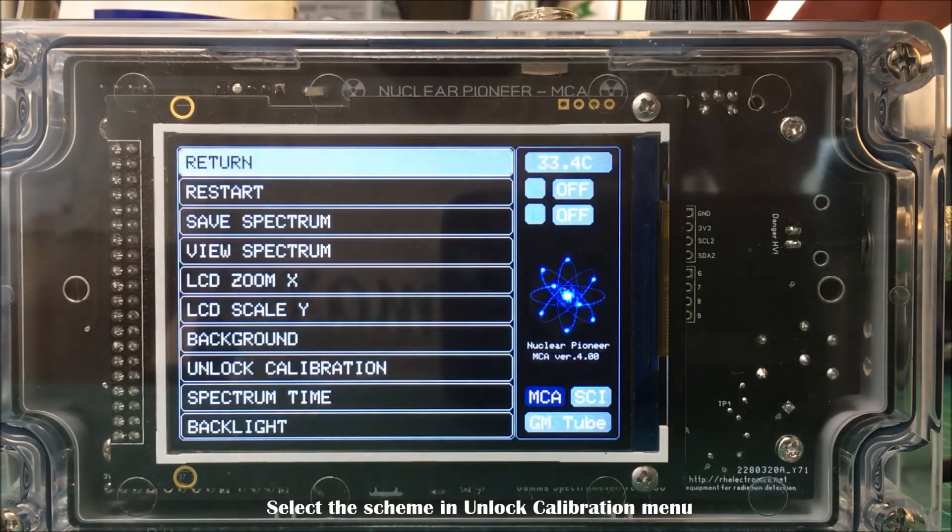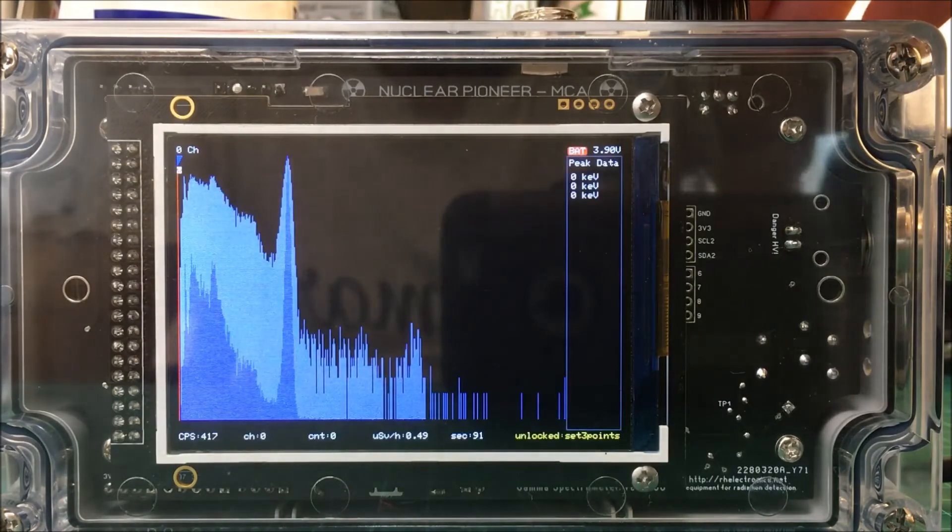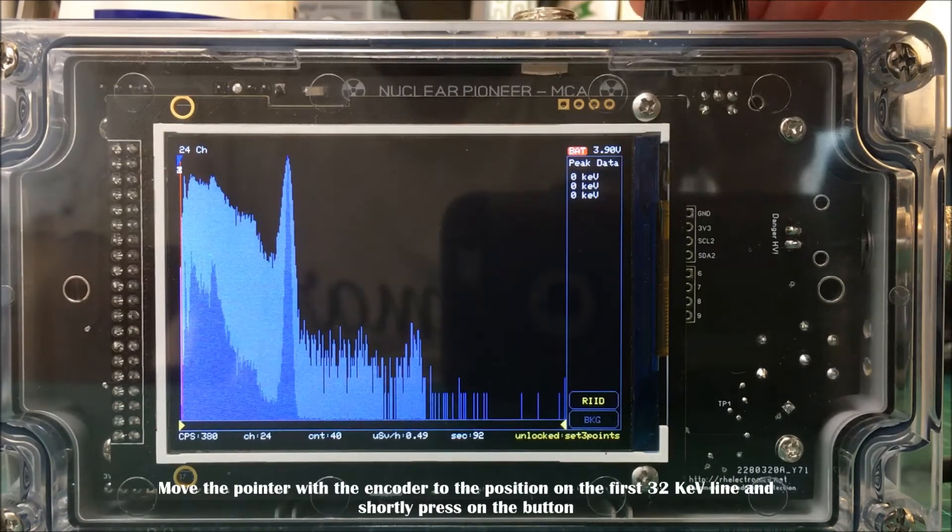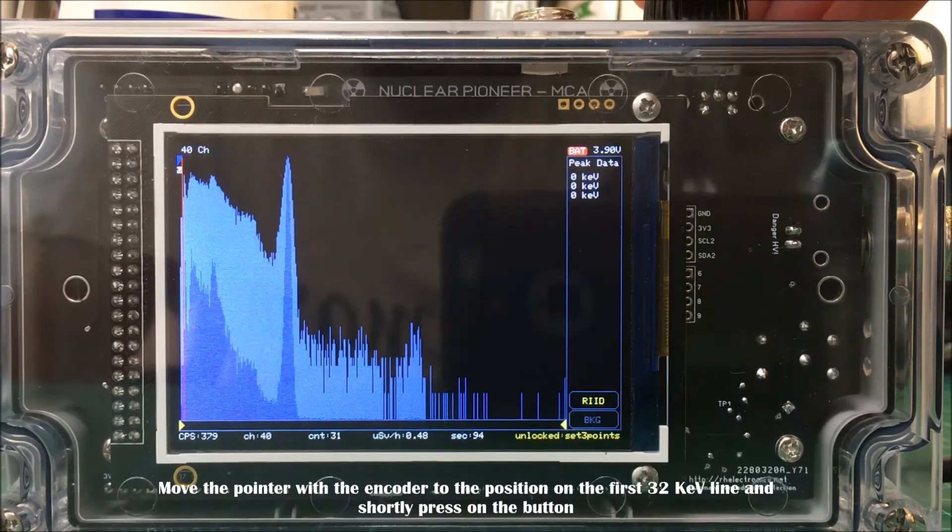Select the scheme in the unlock calibration menu. Move the pointer with the encoder to the position of the first 32 keV line and press the button shortly.